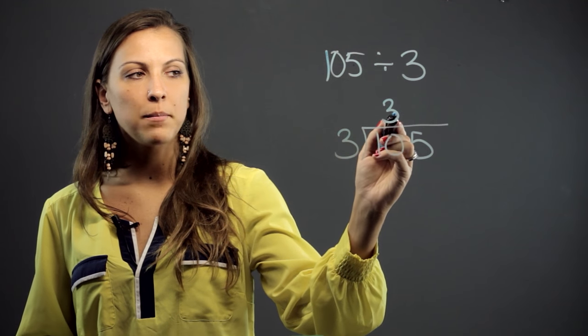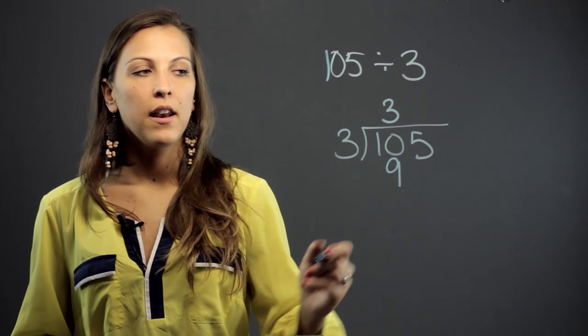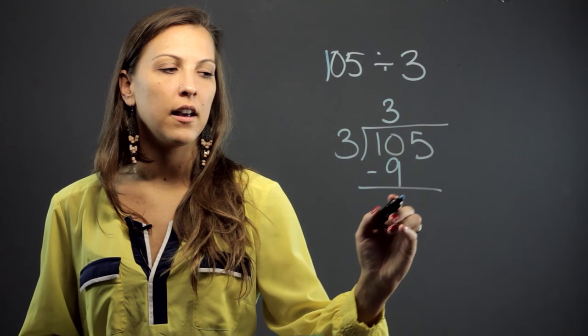Once we have the 3 up here, we multiply 3 times 3 and get 9. Now we subtract 10 minus 9 and get 1.